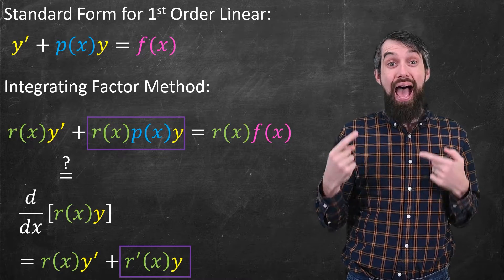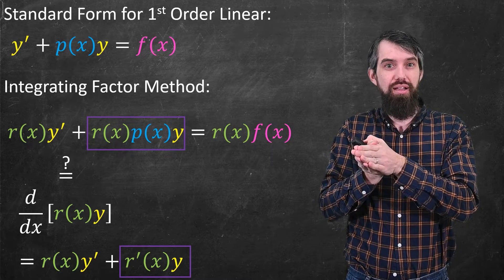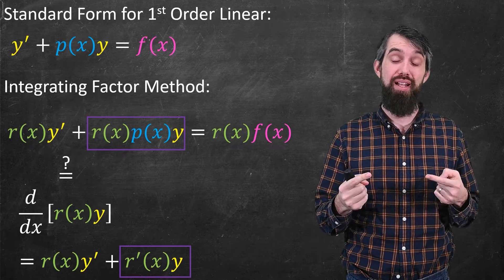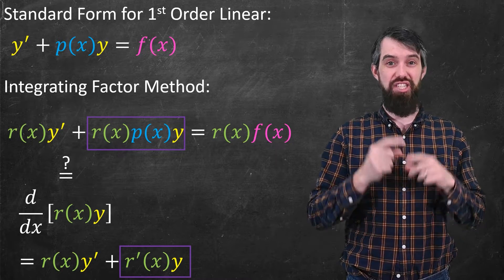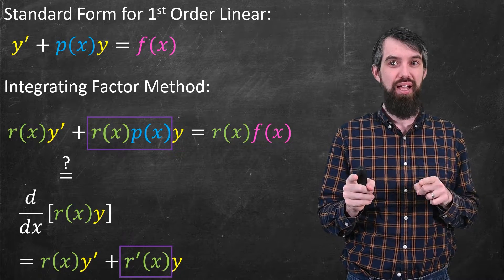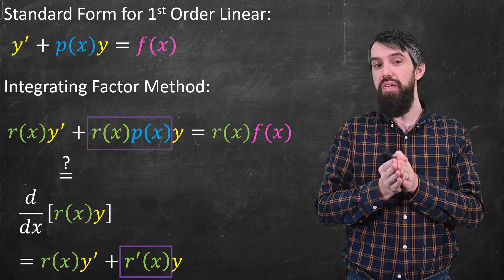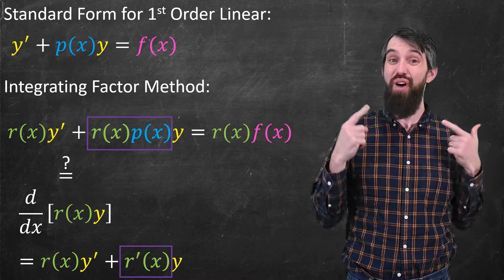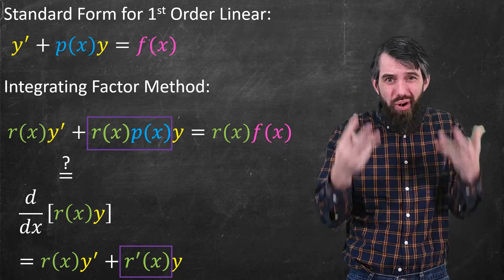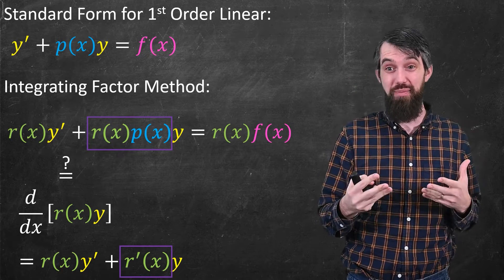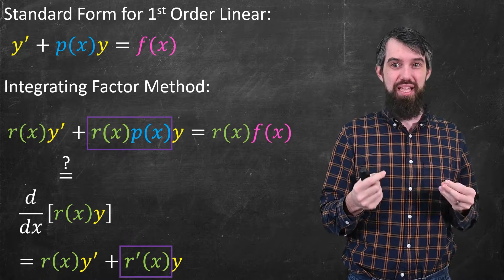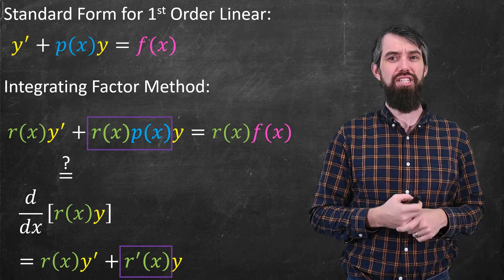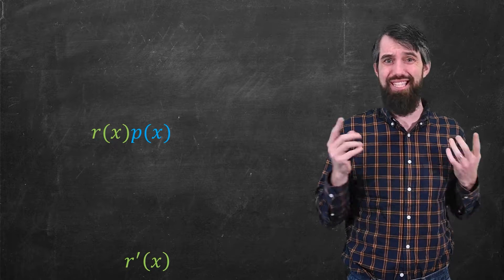In what I have, it's r times p times y. What I want it to be, it's r' times y. At least there's a y in both, so I could actually just get rid of the y in my comparison. It's saying r times p would have to be equal to r'. So again, I'm just trying to find a function of r(x) that would work out to make it nice the way I want it to be. And if that was to be the case, then these two things would have to be equal. Okay, so let's just play around with that. Let's just set those two things being equal and just see what we get.